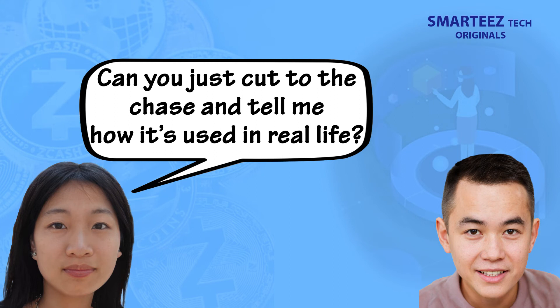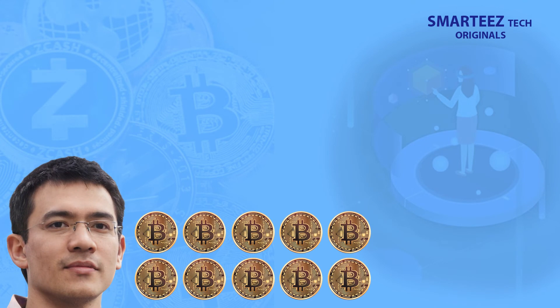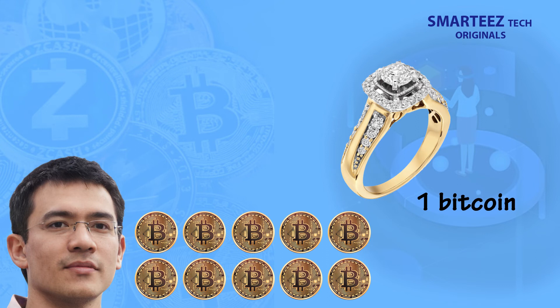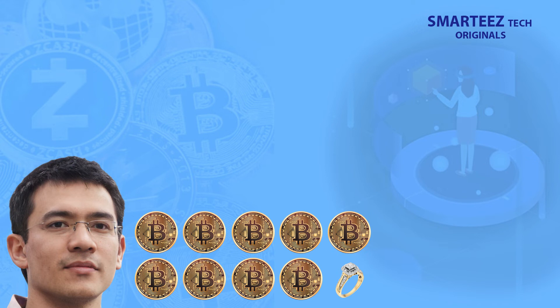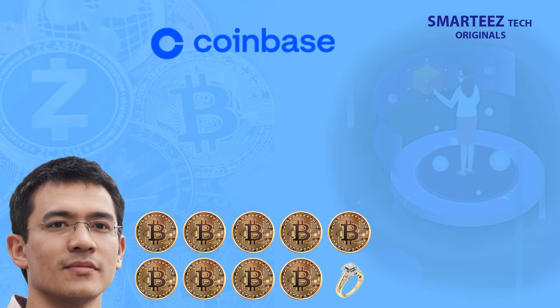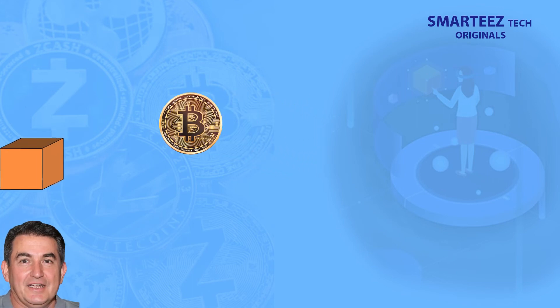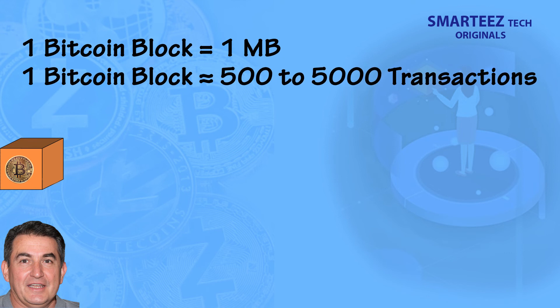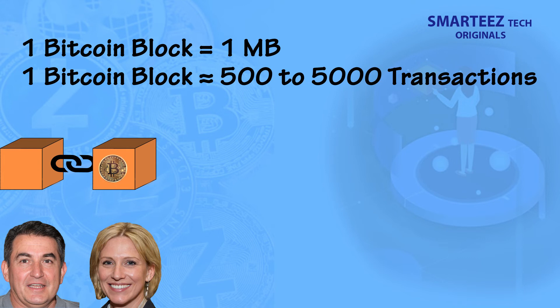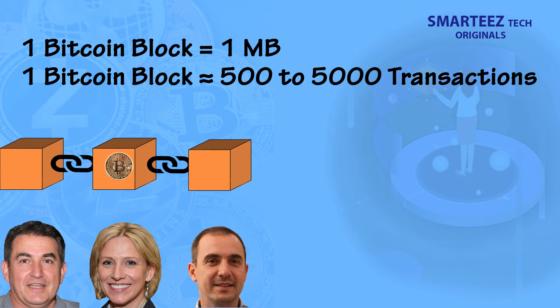To understand how blockchain solves practical problems, here's a real-life example using Bitcoin. Let's say you have 10 bitcoins and decide to buy an expensive diamond ring using 1 bitcoin. The diamond retailer gets your bitcoin and trades you the diamond. Now, the bitcoin you have had a path before it reached you — maybe you bought it at a Bitcoin exchange or mined it. Either way, the bitcoin underwent one or more transactions before reaching your hands.